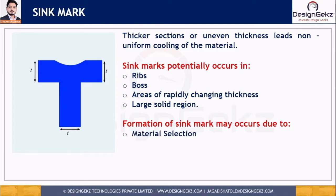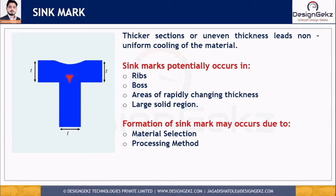With material selection, the sinkage rate or sinkage percentage is different for different materials — some materials sink more, some have a low sinkage percentage. The material selected for the part has an impact on the sinkage and sink marks. Sink marks also occur due to processing parameters such as injection rate, injection speed, melt temperature, barrel temperature, and mold temperature.